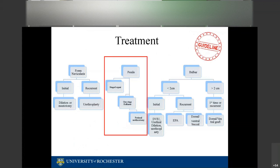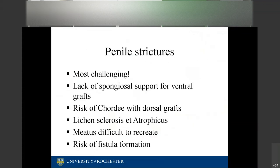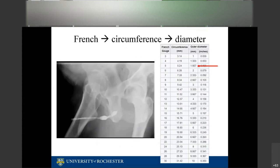Penile urethral strictures are probably the most technically challenging, because of the blood supply, the lack of spongiosal support for ventral grafts, risk of chordee with dorsal grafts, lichen sclerosus involvement, difficulty recreating the meatus, and risk of fistula formation. Of all urethral stricture types, this is probably the most challenging.